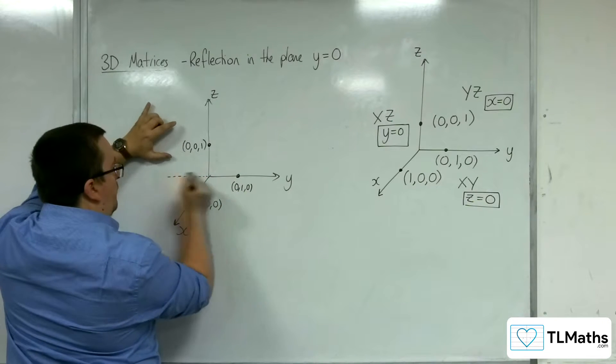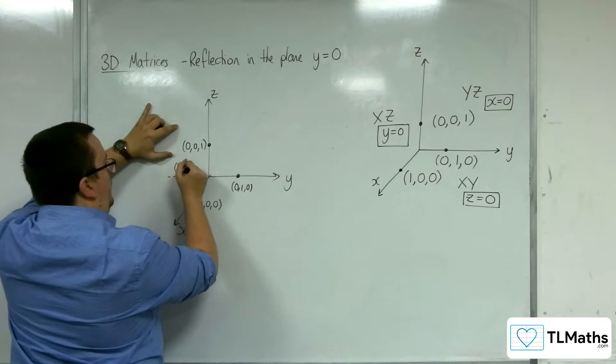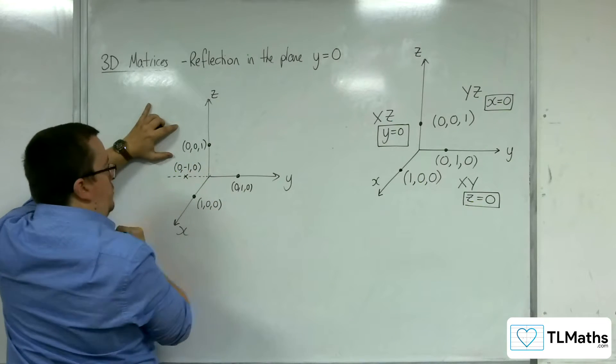The only one that's going to change is the one that's not on the plane, this one, which will reflect back over here to 0, minus 1, 0.